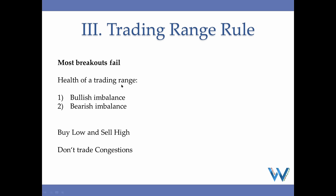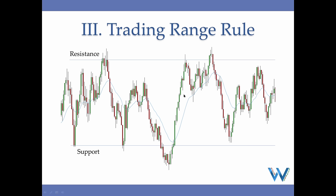Most breakouts of trading ranges will pull back into the trading range and the breakout will fail. These breakouts work just enough to keep the majority of traders trying, but in the long term this is not a proven strategy. When watching a trading range, we observe its health — whether there is a bullish or bearish imbalance. The trading range rule also says: not only will most breakouts fail, but we want to buy low and sell high. Congestion is just a small pattern of a trading range — avoid trading it.